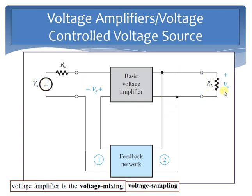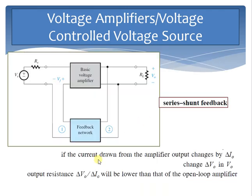The decreased output resistance R0 of the basic amplifier circuit results because the feedback works to keep the output voltage constant. If the current drawn from the amplifier output changes by delta I0 and the change in output voltage is delta V0, then the output resistance equals delta V0 divided by delta I0, which is lower than that of the open-loop amplifier.